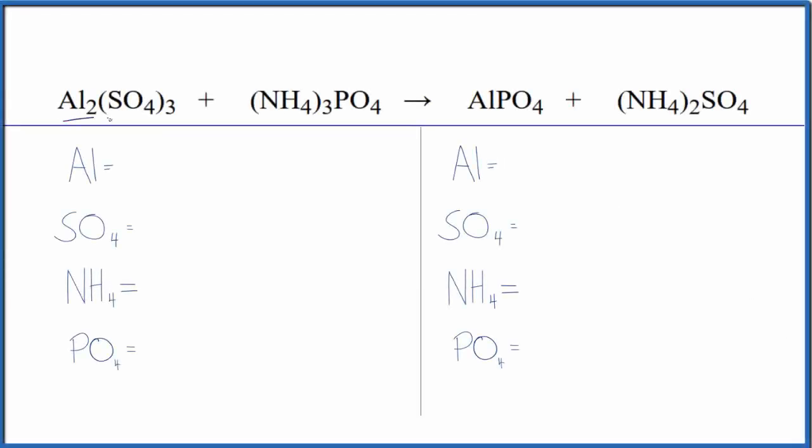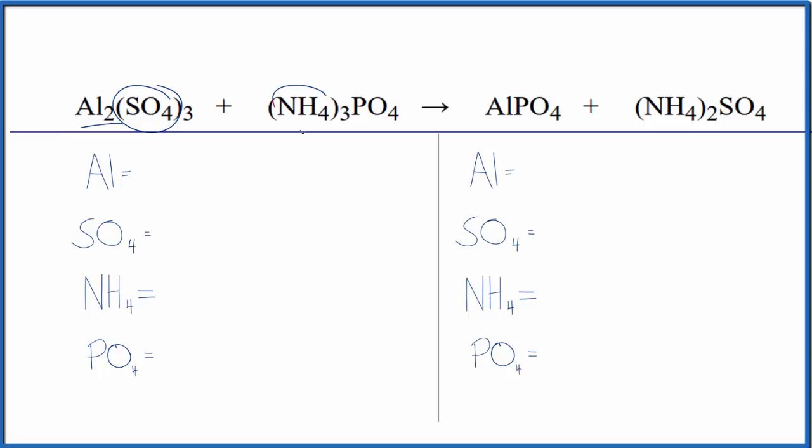To balance this equation, we have aluminum sulfate plus ammonium phosphate. So to balance the equation, we're going to use a bit of a trick that will make it a lot easier, a lot faster. So let's count the atoms up and balance the equation.